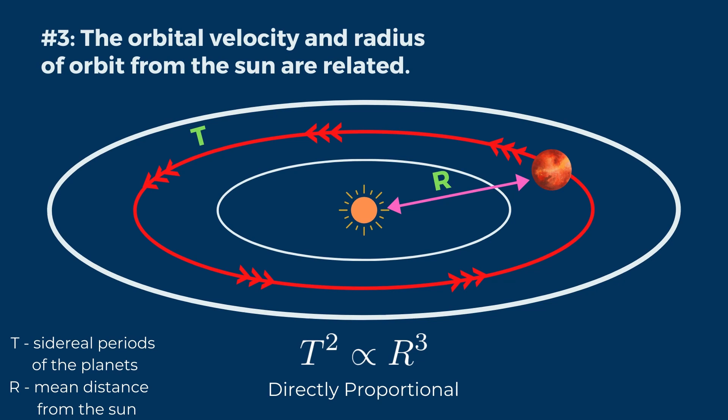Kepler's third law of planetary motion, the law of harmony, states that the squares of the sidereal periods of revolution of the planets are directly proportional to the cubes of their mean distance from the Sun. What this really means is that the sidereal period — the time taken for the planet to orbit one round around the Sun — corresponds to the distance of the planet from the Sun. The diagram shows a pink double-headed arrow from the Sun to the planet, represented by capital letter R, the mean distance of the planet from the Sun, and the relationship between sidereal period and distance mathematically.